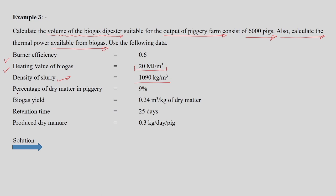The density of the slurry is given, and here we are finding volume based on slurry density. The percentage of dry matter content is 9 percent. As we know, for any digester the solid content in the slurry should be around 9 to 10 percent. The biogas yield is 0.24 cubic meters per kg of dry matter, which depends on the feedstock being used.